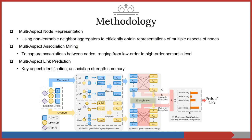The overview of MANA is shown in the figure. MANA is composed of three modules: multi-aspect node representation module, multi-aspect association mining module, and multi-aspect link prediction module.